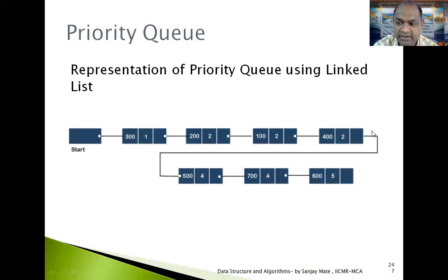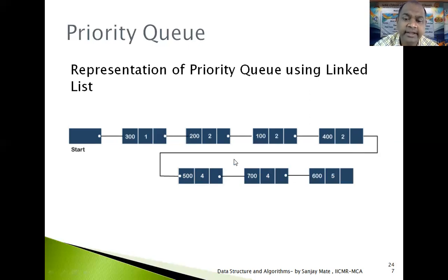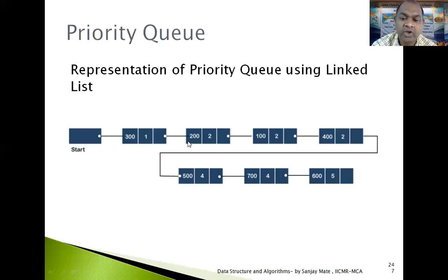The element having priority 3 will be inserted in between 400 and 500. You can maintain the priority order at the inserting time or at the deleting time — there are two ways to implement it. Here we are considering the priority at the insertion time. So at deletion time we are only deleting from one end, not bothering about the priority, because it was inserted properly with the correct precautions.